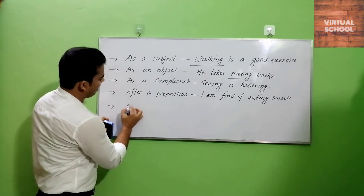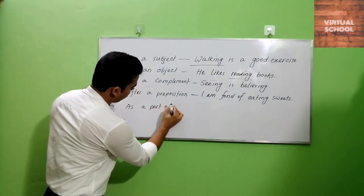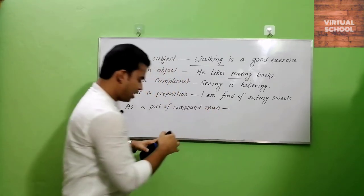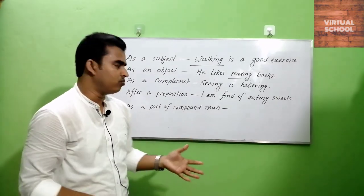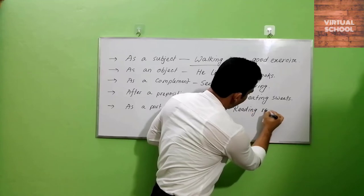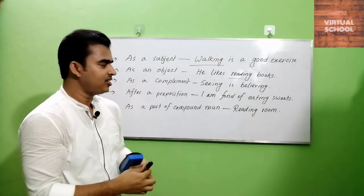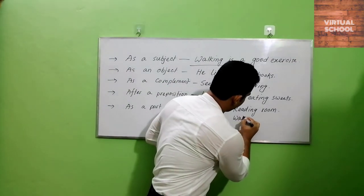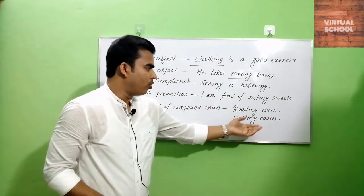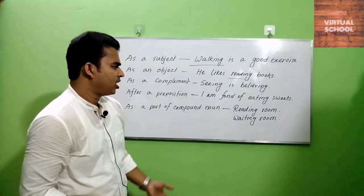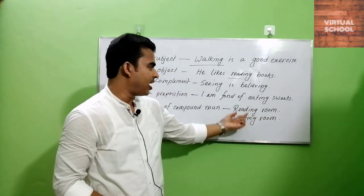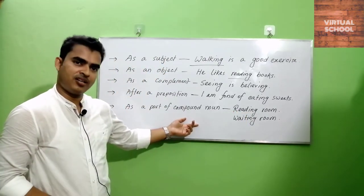Then, as a part of a compound noun: a gerund can be used as a part of a compound noun. For example, 'reading room' — this is a compound noun. Waiting room, swimming pool, and so on. In 'reading room,' reading is the part of the compound noun, and reading is the gerund.